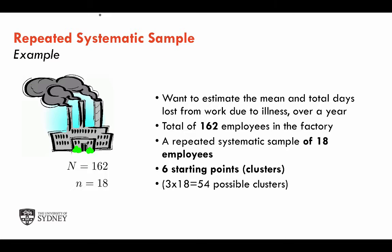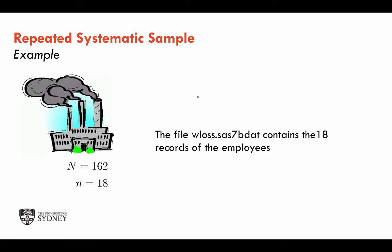The textbook example estimates the mean and total days lost from work due to illness in a factory with 162 employees, using repeated systematic sampling to select 18 employees. We will have six starting points defining the subsamples or clusters. The number of possible subsamples out of 162 is 54 possible clusters, which is important for defining the weights — more details are in the book. The data file WLOS on the e-learning website contains records for the 18 individuals as a SAS file. The construction for STATA is slightly different, requiring entry of cluster-level estimates rather than individual records.